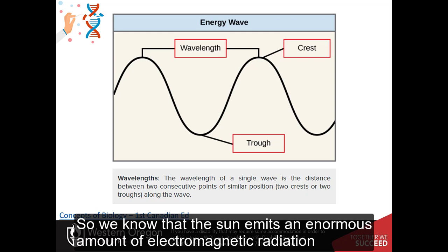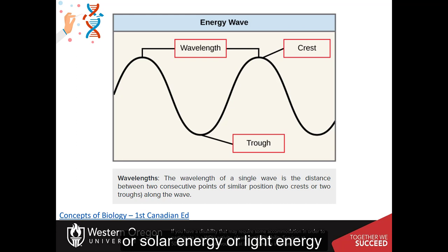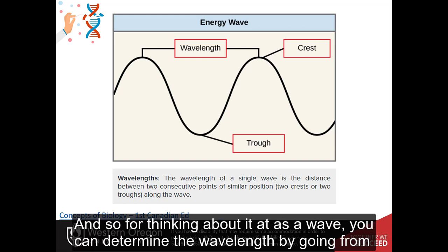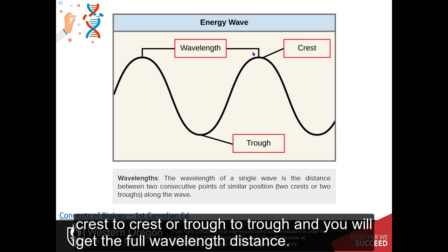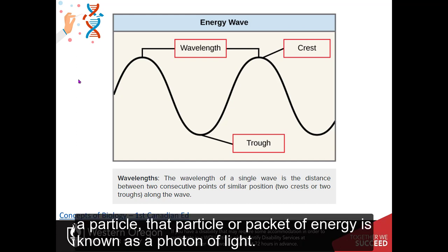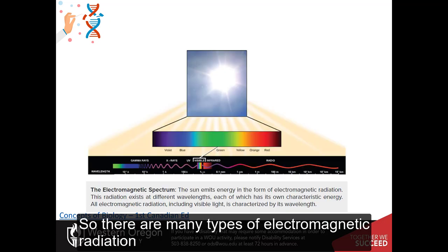So we know that the sun emits an enormous amount of electromagnetic radiation or solar energy or light energy. And so you need to recall that light can act as both a particle and a wave as it travels. And so if we're thinking about it as a wave, you can determine the wavelength by going from crest to crest or trough to trough, and you will get the full wavelength distance. And if we think of the energy of light coming in as a particle, that particle or packet of energy is known as a photon of light.